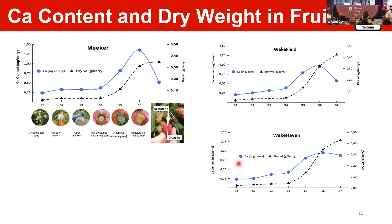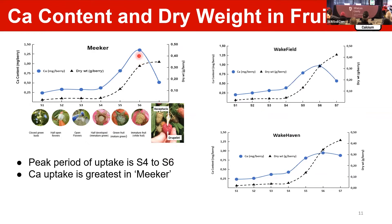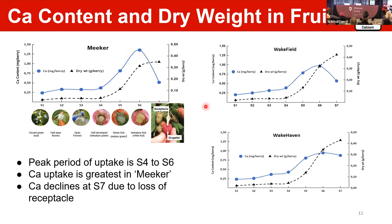Comparing calcium content in dry weight across Meeker, Wakefield, and Wakehaven: the peak period for all of them is between S4 and S6. Calcium uptake is greatest in Meeker compared to Wakefield and Wakehaven. All genotypes show a decline at S7 due to loss of the receptacle — a decrease of about 61% for Meeker, 41% for Wakefield, and 6% for Wakehaven.